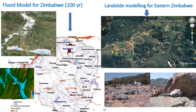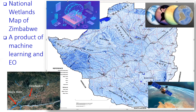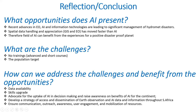All of this analysis has been done in a GIS environment, with data processed using artificial intelligence. Regarding the National Wetlands of Zimbabwe, we also participated in delineating wetlands using geospatial techniques and machine learning. This is a machine learning product because the data was trained using machine learning algorithms. We can now identify wetland areas which can potentially be flooded.